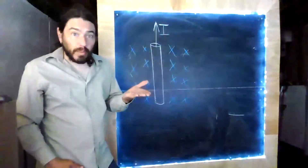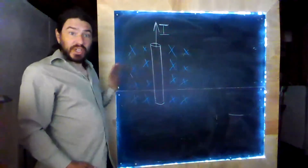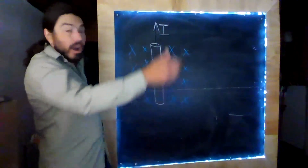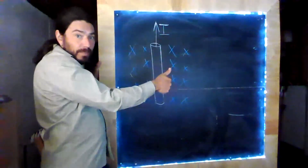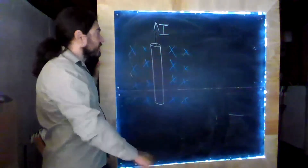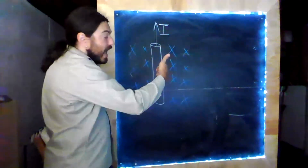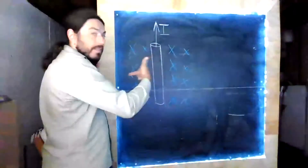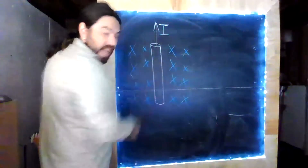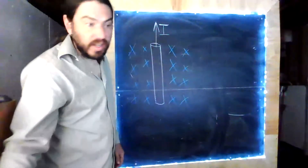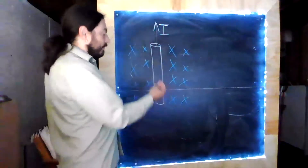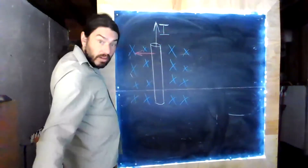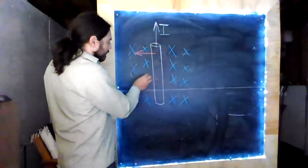So can we use right-hand rule number two to figure out the direction of the force on this wire? Sure we can. Our thumb goes in the direction of the current. Our index finger is in the direction of the field. And our middle finger will be in the direction of the force. That means that there is a force to the left on this wire, and we just used right-hand rule number two to figure this out.